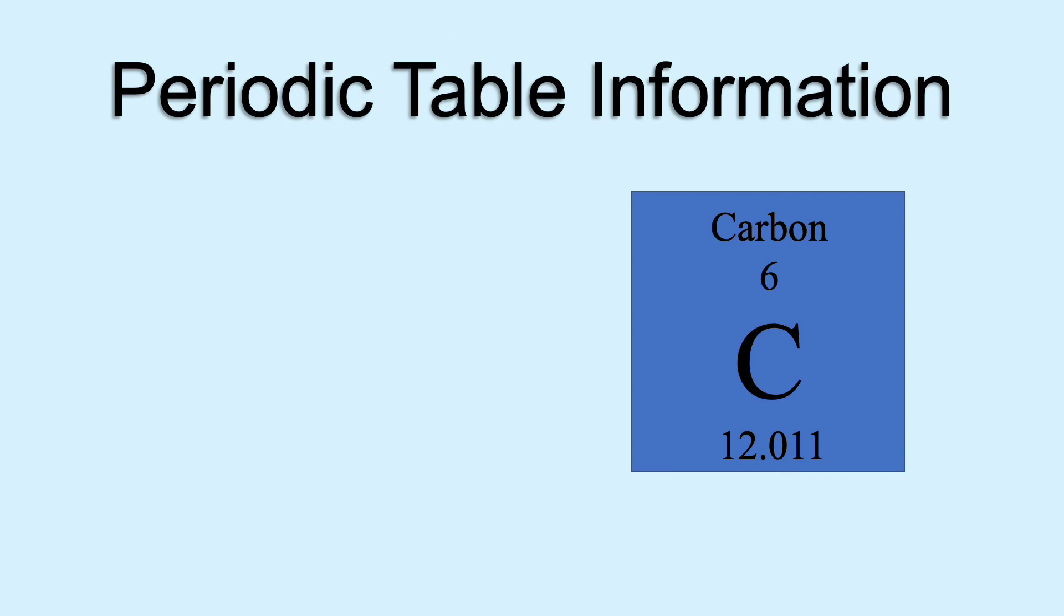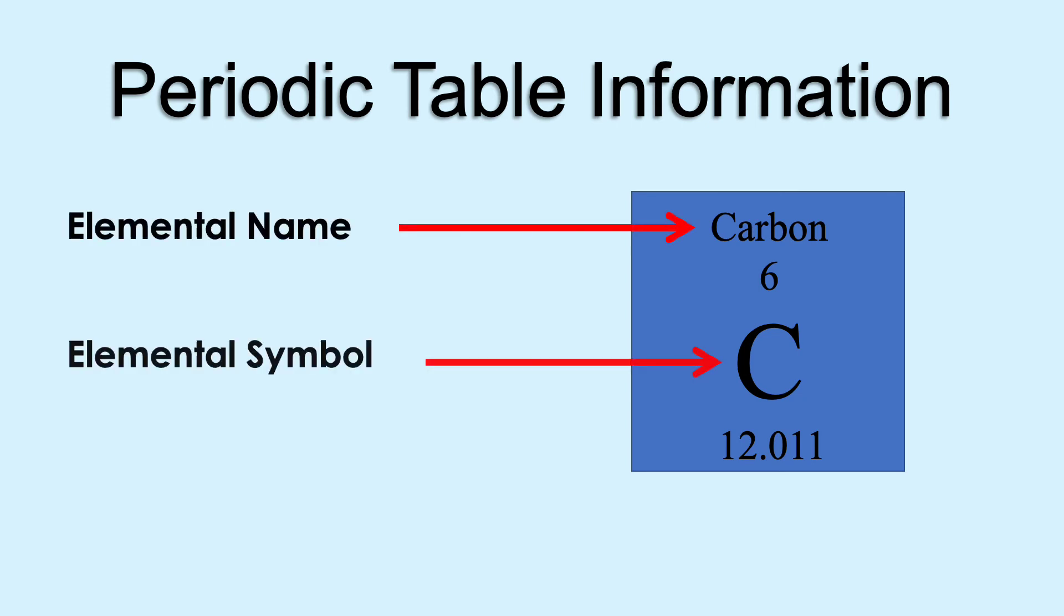Finally, what information is in the periodic table? Some tables can be very busy. Here are some of the basics. The elemental name and the elemental symbol. The symbol can be one or two letters, with the first letter always uppercased.